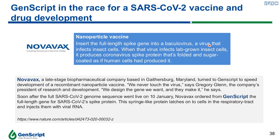While researchers are scrambling for vaccine and drug development, GenScript has spent all efforts to help researchers accelerate their studies with in-house capabilities. Here is a classic example: the partnership formed between GenScript and Novavax. Novavax aims to deliver a next-generation nanoparticle vaccine in serious infectious disease. The objective was to insert the full-length spike gene of the coronavirus into a baculovirus to produce coronavirus spike protein that is folded and sugar-coated as human cells produce it. Using GenScript's in-house technology, we completed gene synthesis with good quality in three days, and this work was published in Nature.